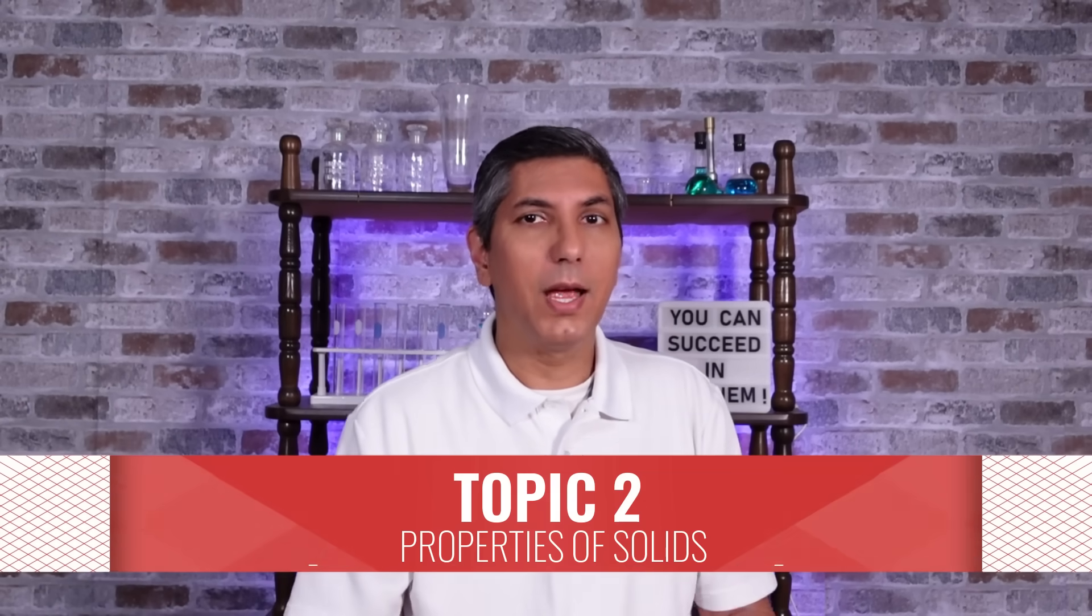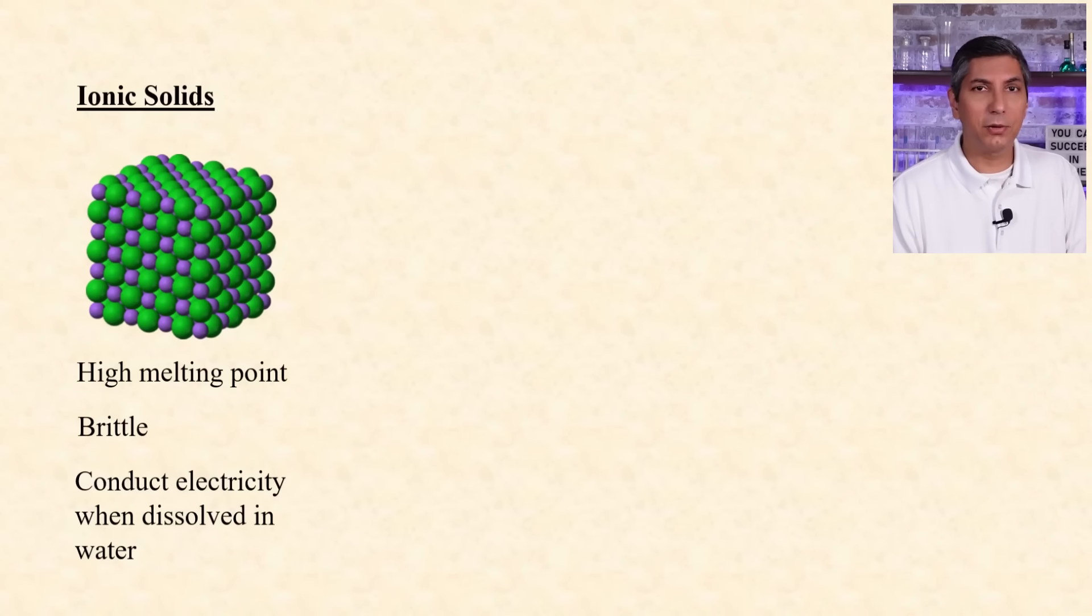Different types of solids have different properties. Ionic solids have high melting points due to the strong attractions between oppositely charged ions. They are also brittle and conduct electricity when dissolved in water.